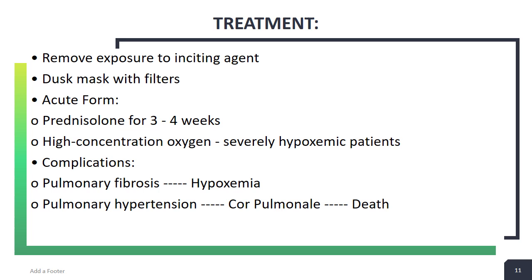Treatment involves removing exposure to the inciting agent. Dust masks with filters can be used. The acute form is treated with prednisolone for at least 3 to 4 weeks, and high concentration oxygen should be given in severely hypoxemic patients. Complications may include pulmonary fibrosis leading to hypoxemia and respiratory failure. Pulmonary hypertension can also occur, which may lead to cor pulmonale — that is right-sided heart failure — and death.